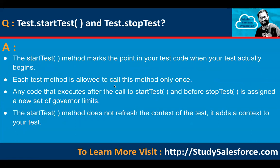Test.startTest and Test.stopTest are two important statements used in Apex test methods. The startTest method marks the point in your test code when your test actually begins. Each test method is allowed to call this method only once. Any code that executes after the call to startTest and before stopTest is assigned a new set of governor limits. Always remember: if you want a new set of governor limits for each method, enclose your code inside startTest and stopTest.